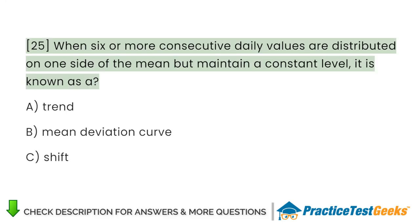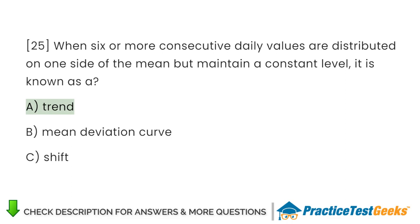When six or more consecutive daily values are distributed on one side of the mean but maintain a constant level, it is known as a: A. Trend. B. Mean deviation curve. C. Shift.